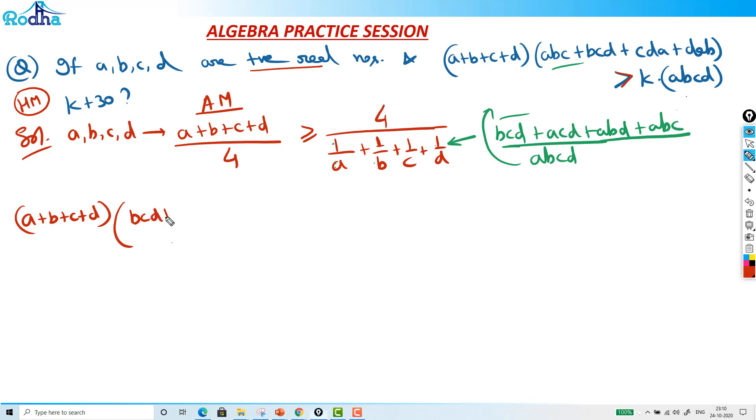Or I should write, I'm just changing the order. So it should be like a plus b plus c plus d multiplied by what? Multiplied by this whole term actually, that is bcd plus acd plus abd and plus abc. Multiplication of these terms should be greater than equal to what?